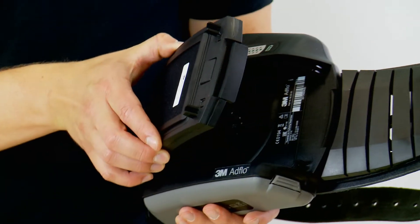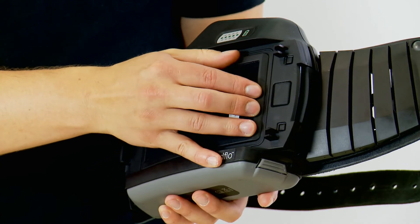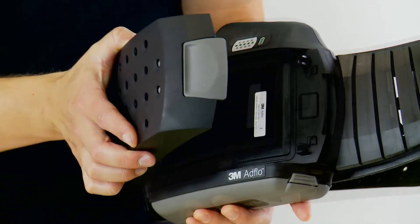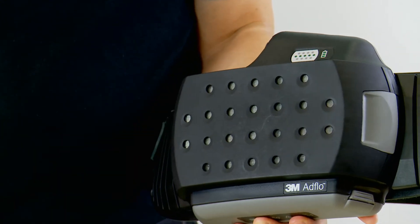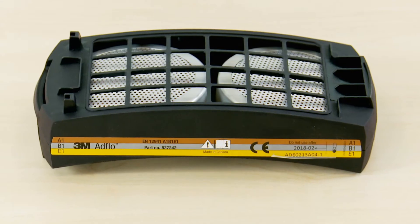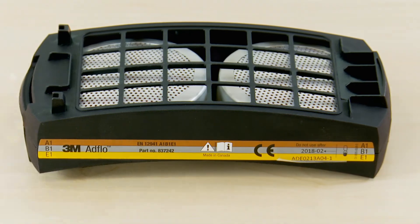Many welders find the smell of welding fumes unpleasant and prefer to use odour filters as well as particulate filters. These are available separately and are fitted underneath the particulate filter. Gas and vapour filters are also available if required.